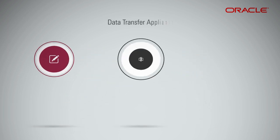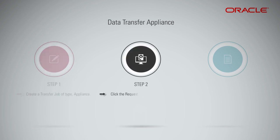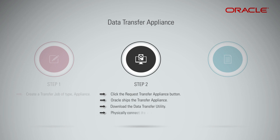For Data Transfer Appliance: Step 1 — using the console, create a transfer job with the appliance job type. Step 2 — click the Request Transfer Appliance button. Once Oracle approves the request, a transfer appliance is shipped to the address you specified. Download the Data Transfer Utility on a host computer at your site that is running a terminal emulator that can access the appliance's serial console. Physically connect the appliance received from Oracle to the host computer with the provided USB DB9 serial cable.